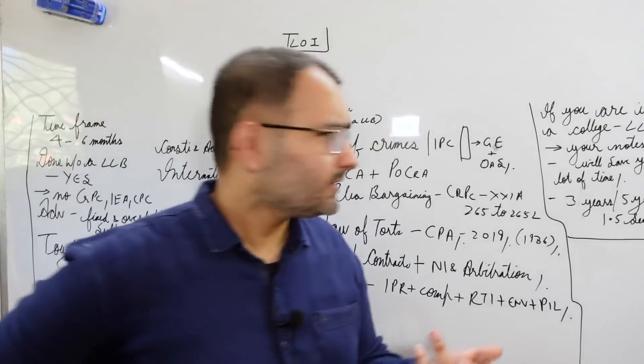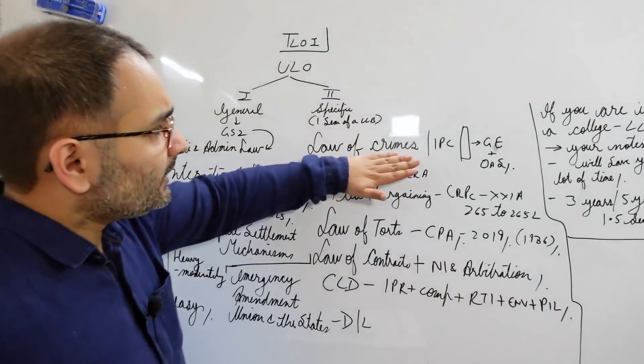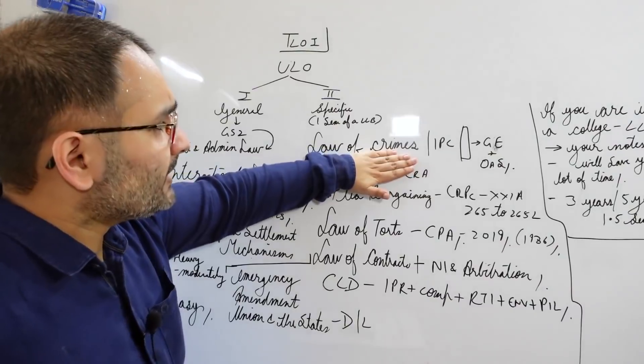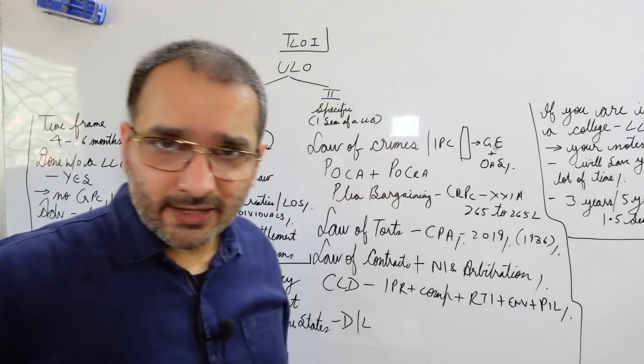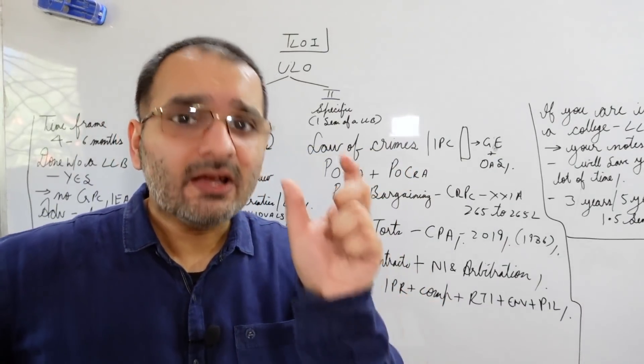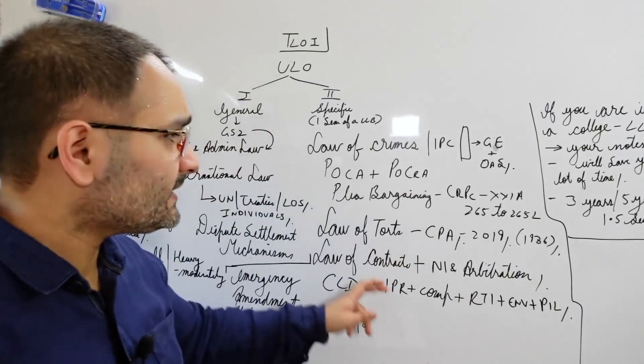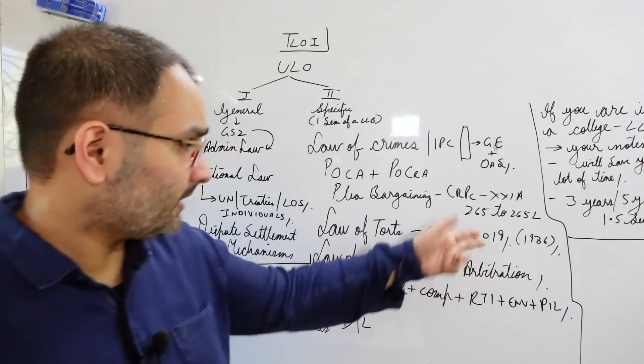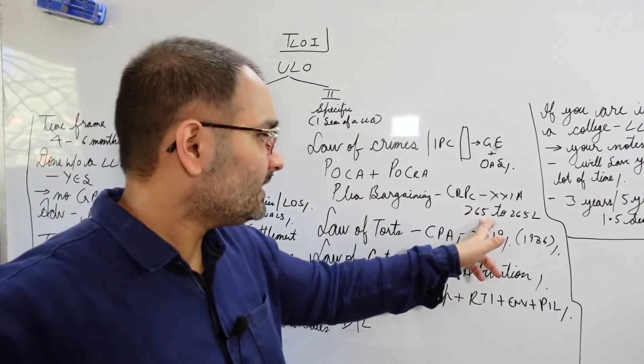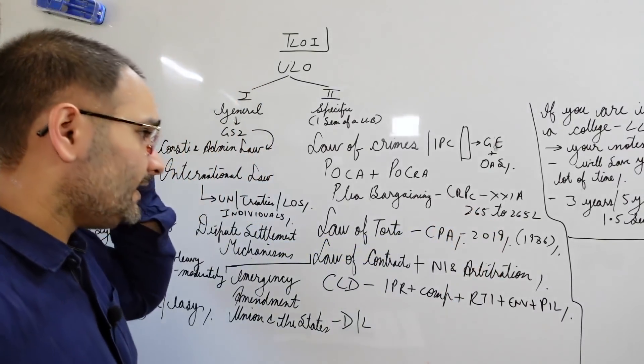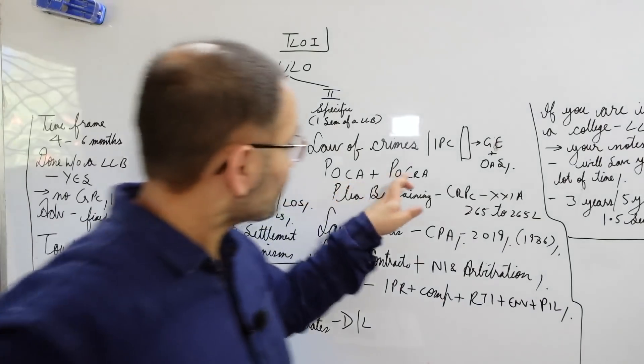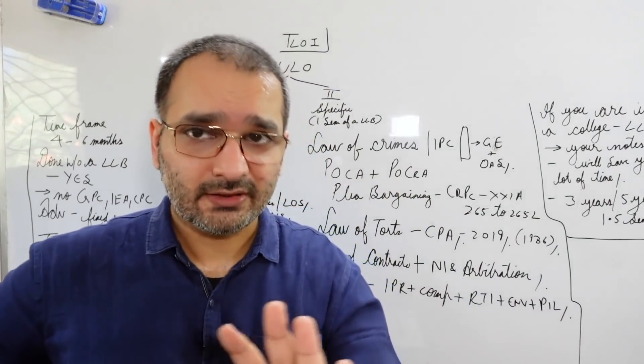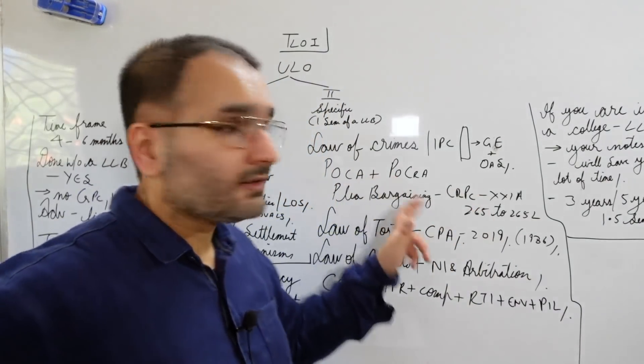Now what exactly are we doing in paper 2? We are studying law of crimes, that is pretty much the IPC, one chapter from the CRPC that is plea bargaining, that was from the recent amendment introduced to the CRPC, that's chapter 21A, we have Prevention of Corruption Act and Protection of Civil Rights Act. Why are these two there? Remember again.